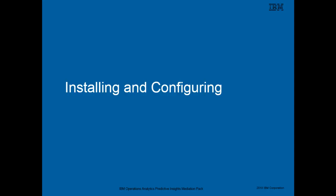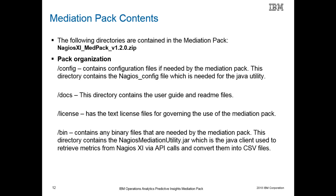In this section we will discuss how to install and configure the Nagios XI Mediation Pack. After you download the Nagios XI Mediation Pack, you must uncompress the zip file which contains the following directory structure. The config directory contains the Nagios config file, which is used to configure the Java utility for this Mediation Pack. The docs directory contains the user guide and readme files. The license directory contains the license files governing usage of the Mediation Pack. The bin directory contains the Java utility used to extract metrics from Nagios XI and format the metrics into CSV files.